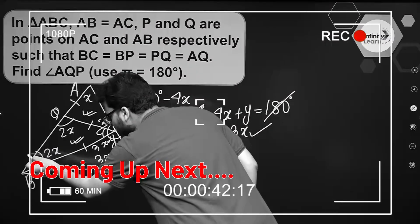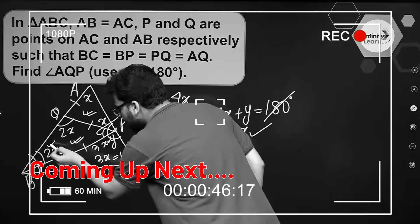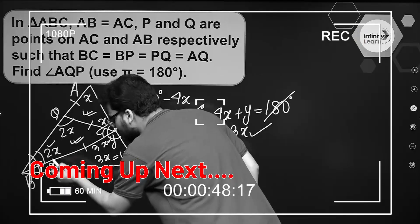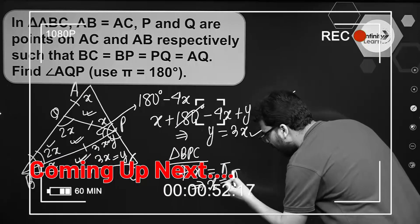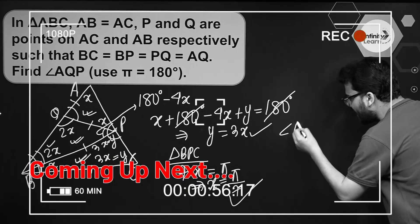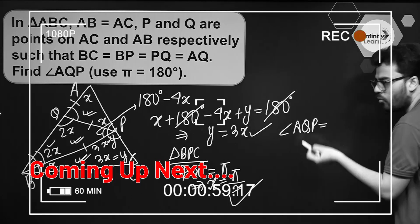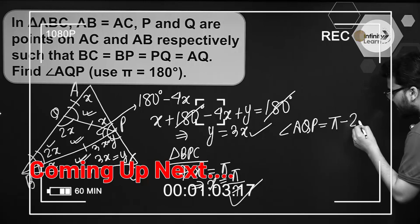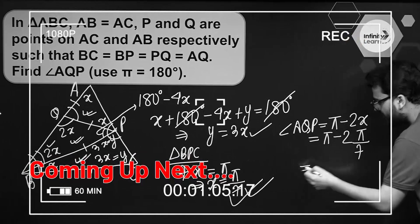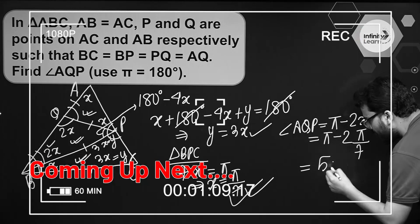So this has to be 3x as well. If this angle is 2x, this has to be x. Basically x will come out to be equal to pi by 7. So angle AQP will be equal to pi minus 2x, which gives us 5 pi by 7.